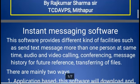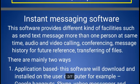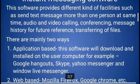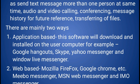First, instant messaging software. This software provides different kinds of facilities such as sending text messages to more than one person at the same time, audio and video calling, conferencing, message history for future reference, and transferring files. You know very well, today we are using WhatsApp, Skype, and Facebook. This kind of software, online and offline, provides communication to so many people with fast internet connectivity. We can use two types of instant messaging software.